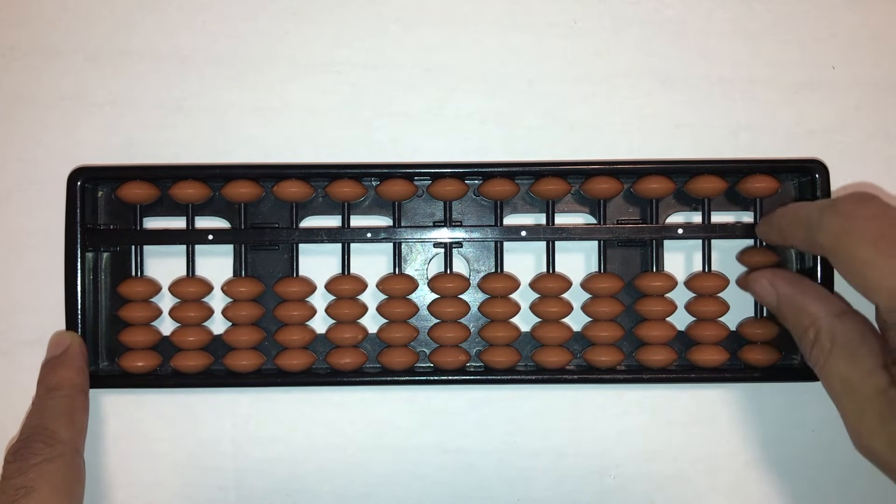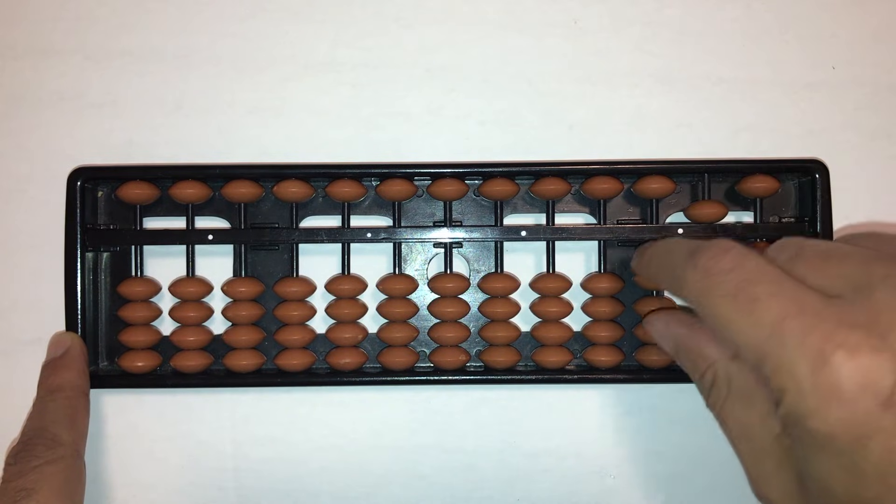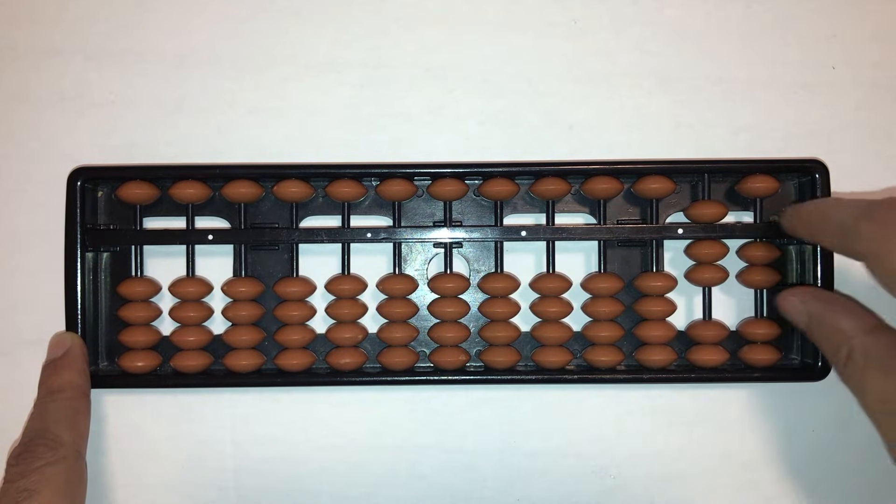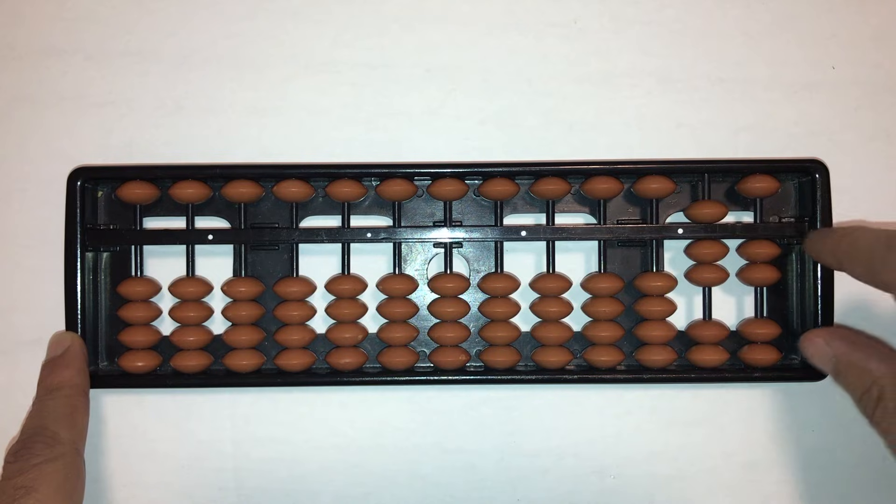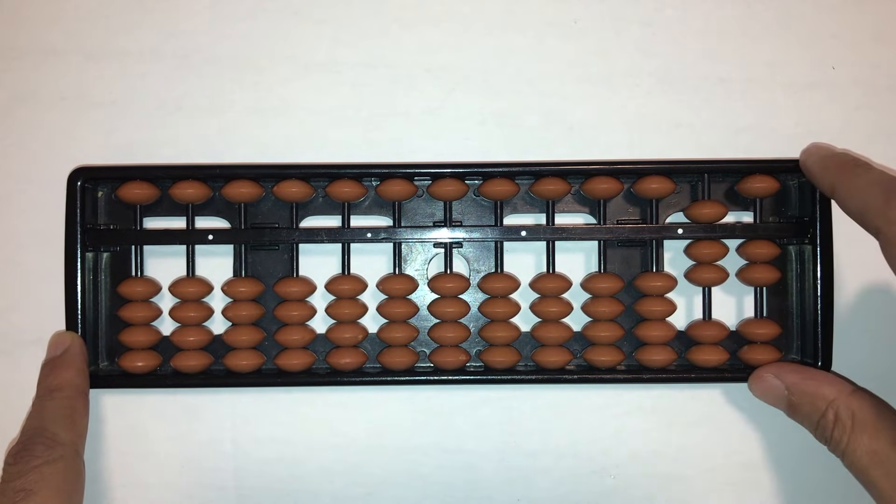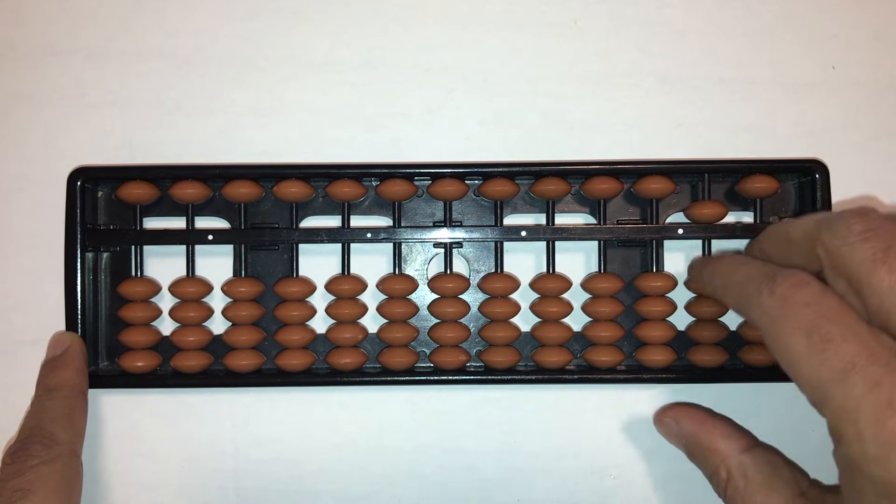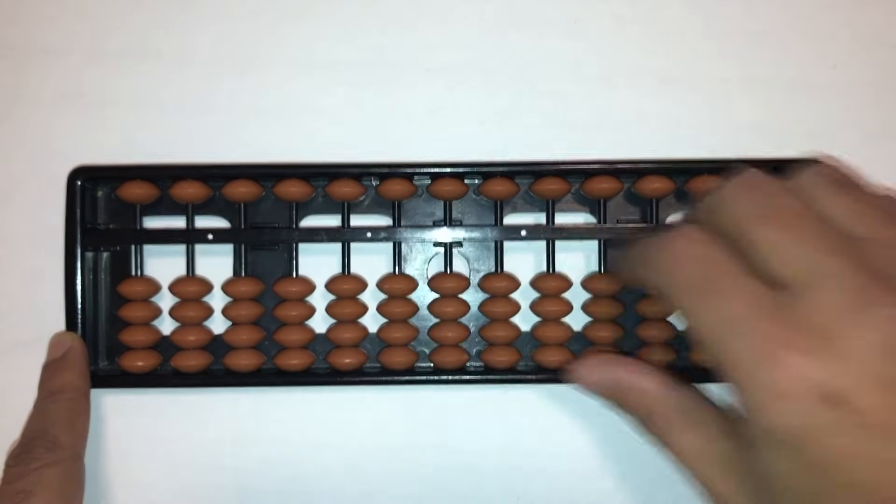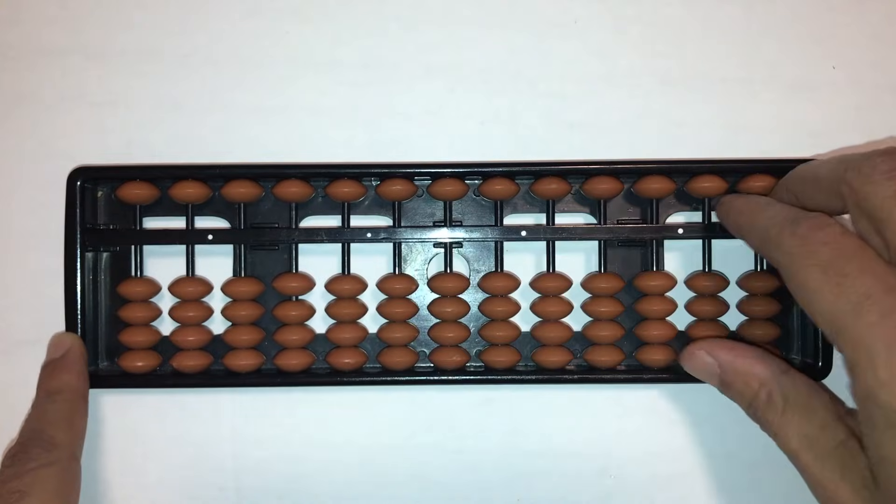Now, once you actually start using the abacus, you'll be moving these beads around to do your calculations. To zero it out before moving on to the next question, you have to clear or zero out the abacus by moving all the beads away from the answer bar, and you have to use your fingers in this kind of abacus.